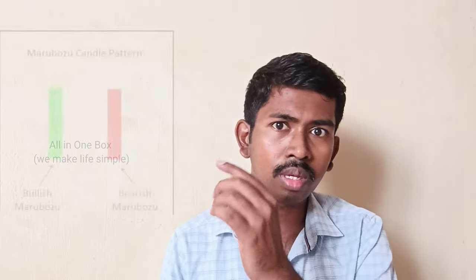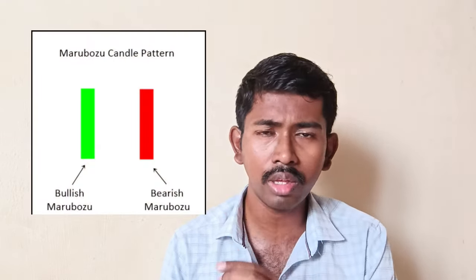The pattern is either a bearish or a bullish pattern. One is a bullish pattern. You can have a pure green candle, with a few wicks on the top and a few on the bottom.